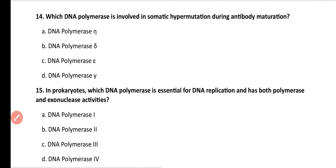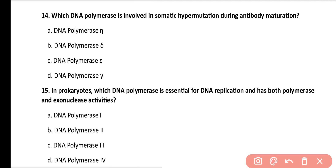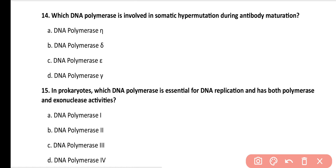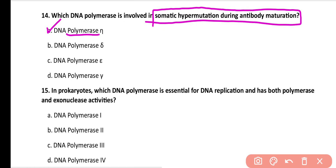Question number 14. Which DNA polymerase is involved in somatic hypermutation during antibody maturation? DNA polymerase eta, DNA polymerase delta, DNA polymerase epsilon, or DNA polymerase gamma? Correct answer is option A. DNA polymerase eta is involved in the somatic hypermutation reaction during antibody maturation.